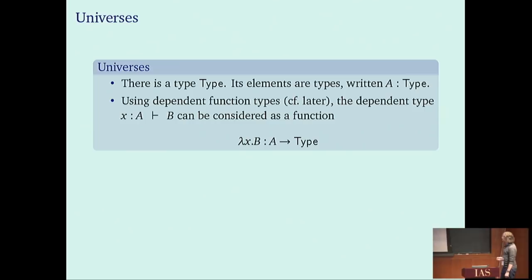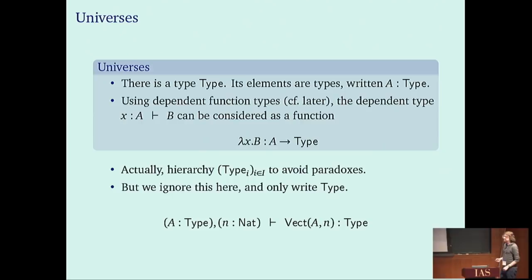The first example of a type is universes. There is a type called 'Type' whose elements are types themselves — types are types, but they are also terms of the type 'Type'. Any dependent type B over A can then be considered as a function from A into this type of types, written λx.B. To avoid paradoxes we usually have a hierarchy of universes indexed by natural numbers, but in this talk I will just write 'Type' to denote some universe.